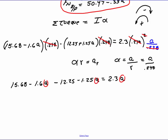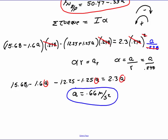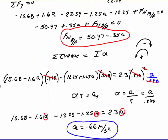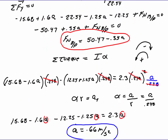Bringing all the A terms together and solving — the only unknown is A — we find acceleration equals 0.66 meters per second squared. To get the normal force of the bracket on the pulley: 50.47 minus 0.35 times 0.66 gives approximately 50.24 newtons.